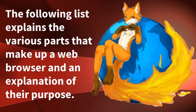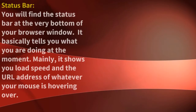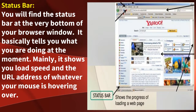The following list explains the various parts that make up a web browser and an explanation of their purpose. The first one is the status bar. You will find the status bar at the very bottom of your browser window. It basically tells you what you are doing at the moment. Mainly, it shows you load speed and the URL address of whatever your mouse is hovering over.